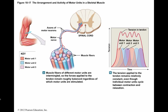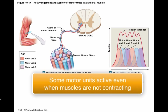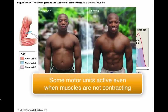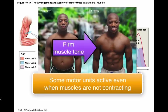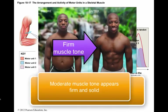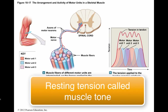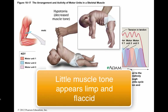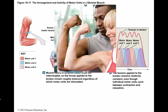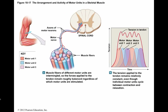In any skeletal muscle, some motor units are always active even when the entire muscle is not contracting. Their contractions do not produce enough tension to cause movement, but they do tense and firm the muscle. This resting tension in a skeletal muscle is called muscle tone. A muscle with little muscle tone appears limp and flaccid, whereas one with moderate muscle tone is firm and solid. Resting muscle tone stabilizes the positions of bones and joints.